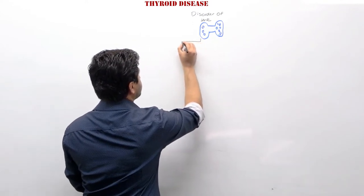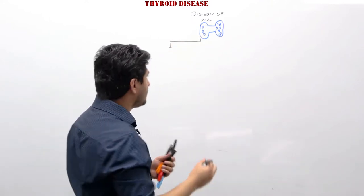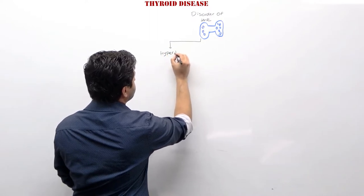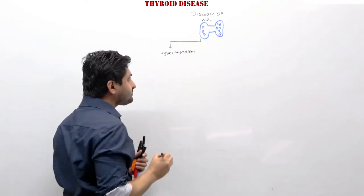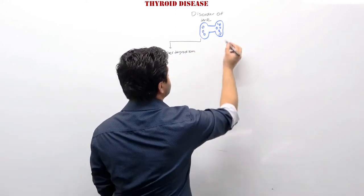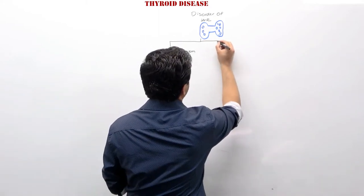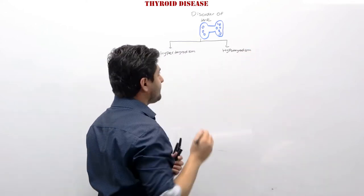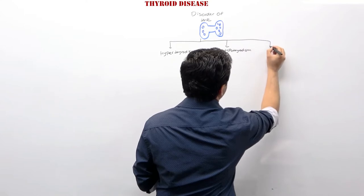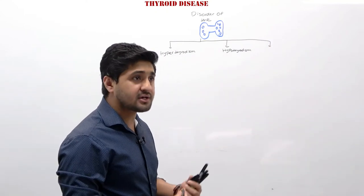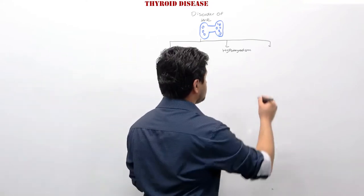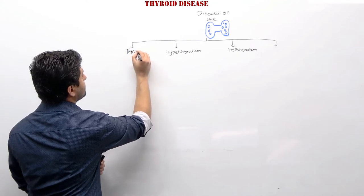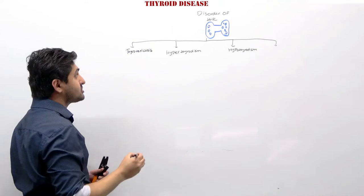We can classify disorders of the thyroid gland into diseases that result in hyper-functioning of the gland, which we call hyperthyroidism, or decreased functioning of the gland, which we call hypothyroidism. There is also a group of disorders where there's no primary problem with the thyroid gland itself but other conditions result in something called thyrotoxicosis.